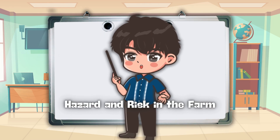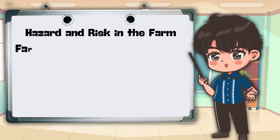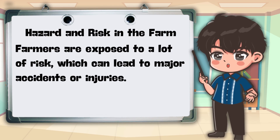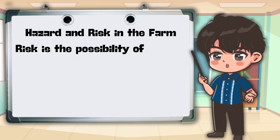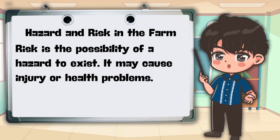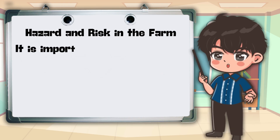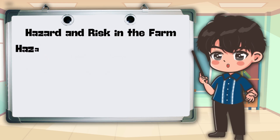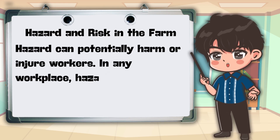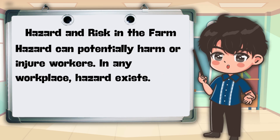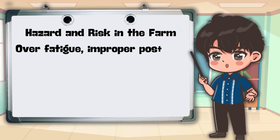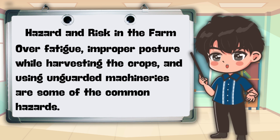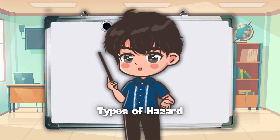What about hazards and risks in the farm? Farmers are exposed to a lot of risks, which can lead to major accidents or injuries. Risk is the possibility of a hazard to exist; it may cause injury or health problems. It is important that workers are properly trained and guided by management. Hazard can potentially harm or injure workers — in any workplace, hazard exists. Over-fatigue, improper posture while harvesting crops, and using unguarded machineries are some of the common hazards.